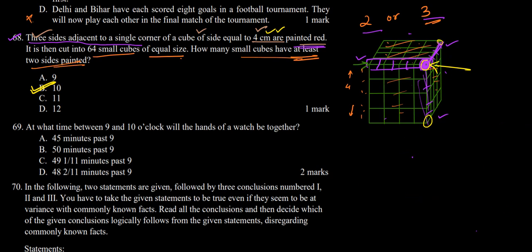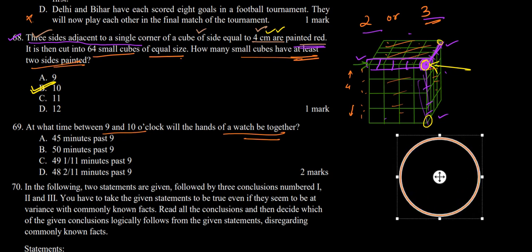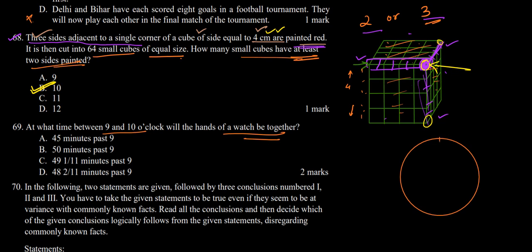Question 69: at what time between 9 and 10 o'clock will the hands of a watch be together? We draw a clock with markings at 12, 3, 6, 9, and other positions. At 9 o'clock, the minute hand is at 12 and the hour hand is at 9. We need to find the time between 9 and 10 o'clock when both hands will be together.